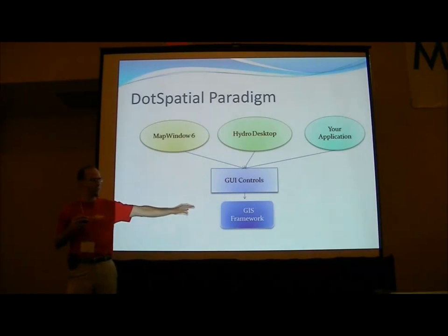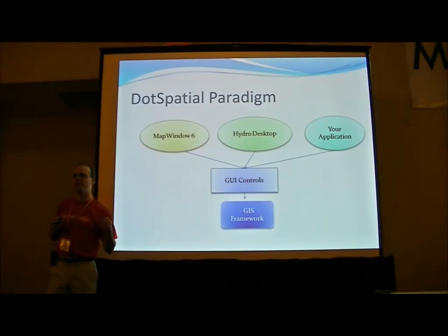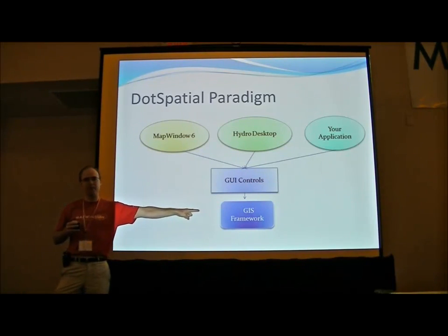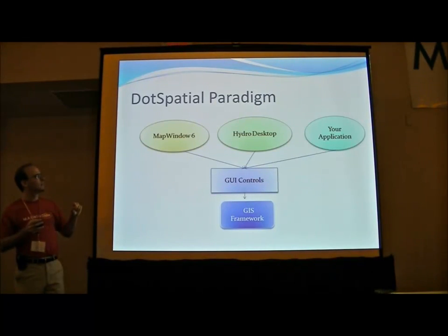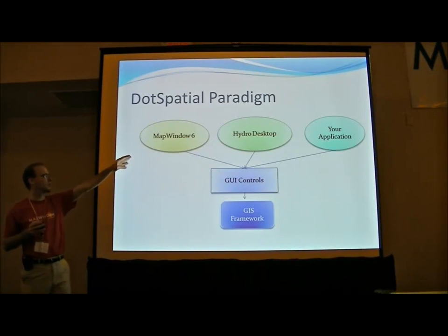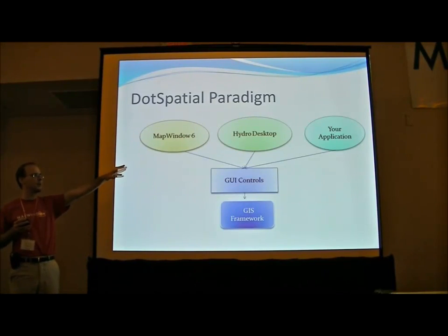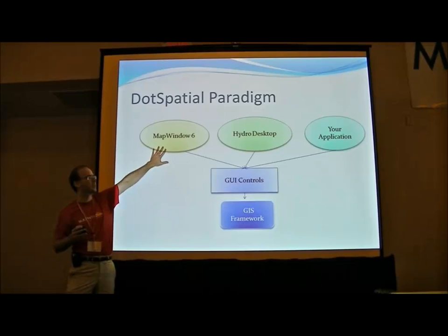The thing that does the calculations can be reused by different GUI structures. If you have a DirectX map or you're doing three-dimensional stuff, you can still use the same framework underneath and do the rest of your GIS — you don't have to reinvent everything. Sitting on top of our current GUI controls, we have two applications: the MapWindows 6 shell and HydroDesktop. But the idea is your application sits in the same place, reusing almost all of the same library.